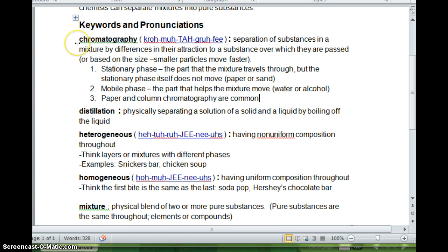And so I added to our notes, chromatography, a separation of substances in a mixture by differences in their attraction to a substance over which they are passed. So it can be based on their size, like I said, smaller particles move faster. There's also different examples where it has to do with their properties of attraction. We're not going to get into those for now. But I want you to be aware that that is another way to do it. You have the stationary phase, the part that the mixture travels through, but the stationary phase itself does not move. So that would be the paper, the sand. The mobile phase.